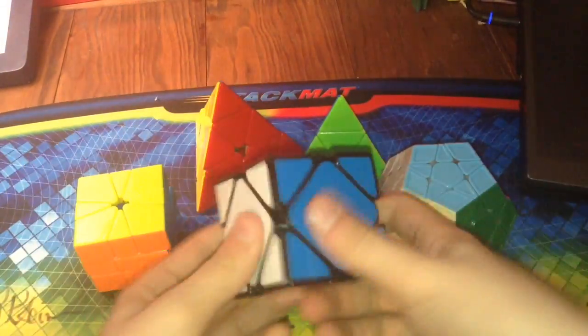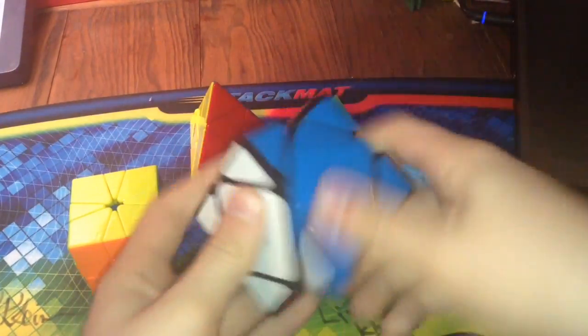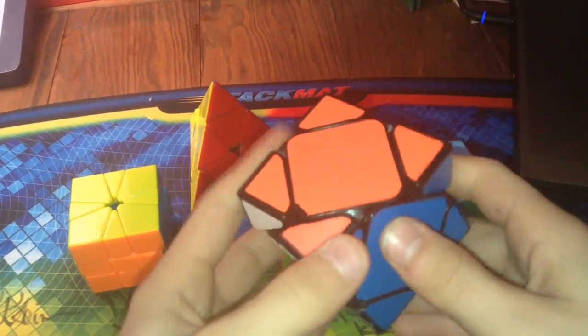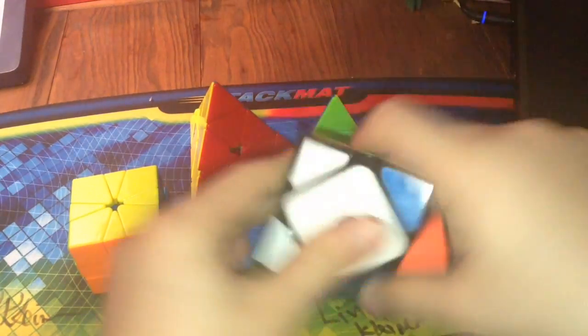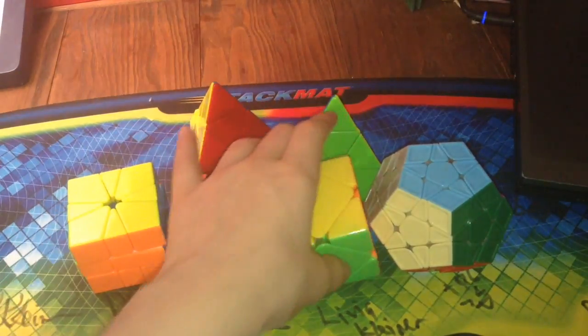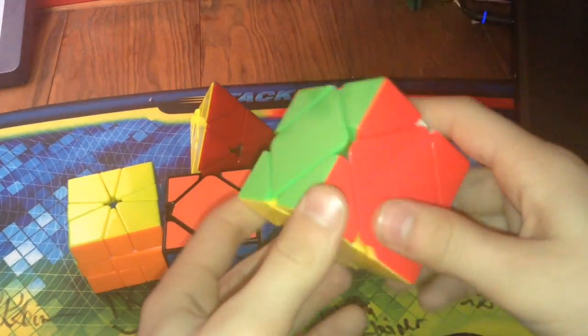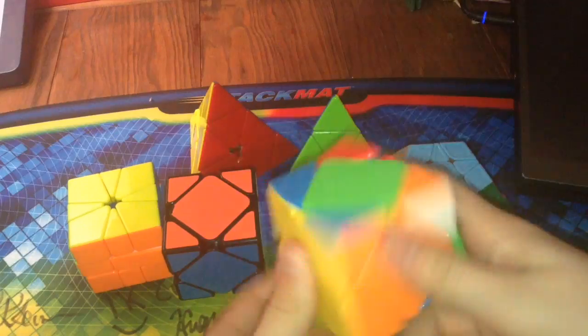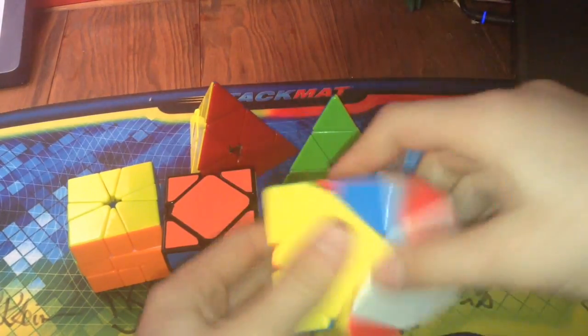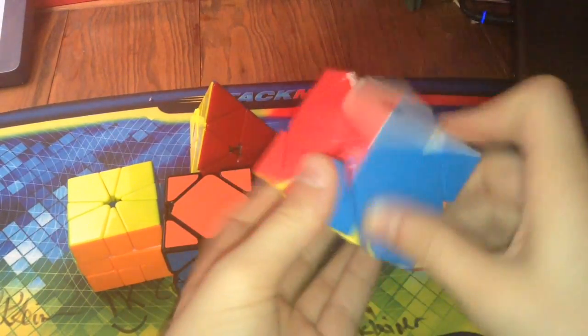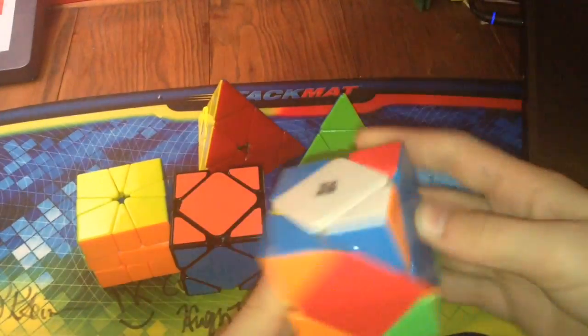Going on to skewb, I have two. I have the Kung's Design skewb. It is a very, very slow skewb, but still performs pretty well. Used to be my main, until I got the Moyu Magnetic skewb at New York City Winter. It's a really nice skewb. It's super fast and smooth. Hasn't popped on me at all. It corner cuts amazingly, and I love it.